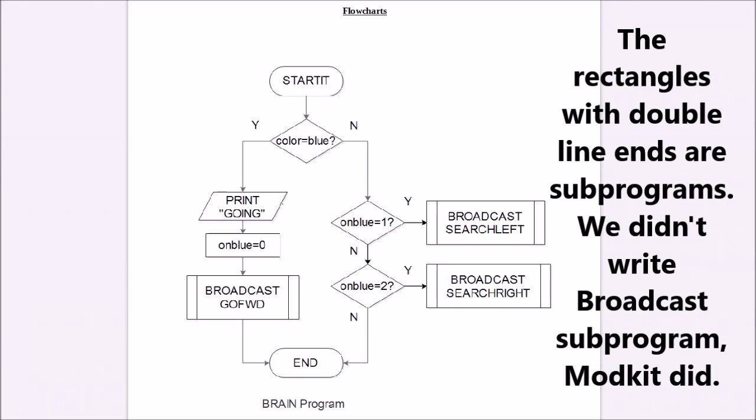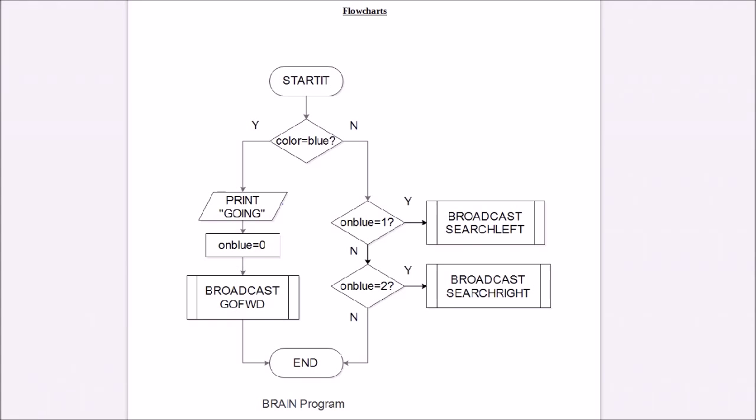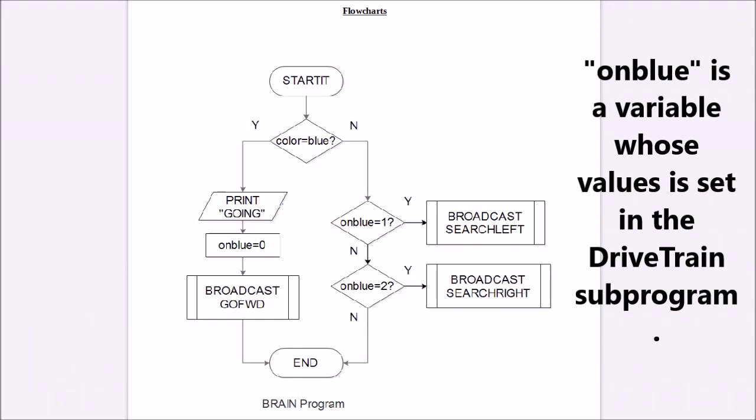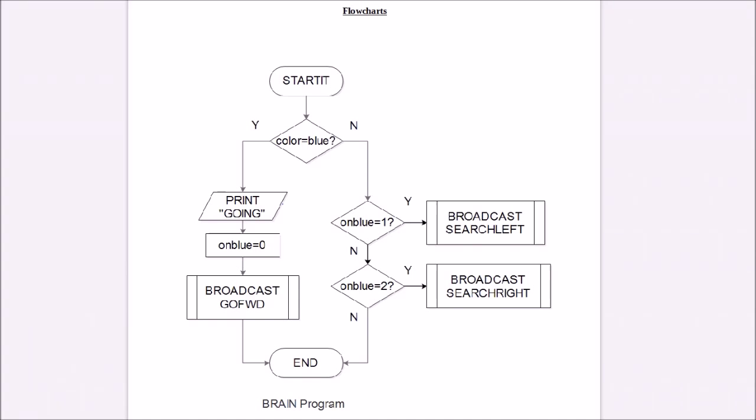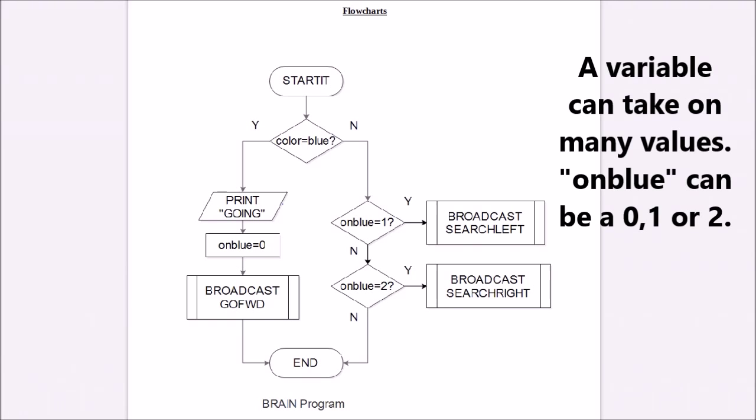Go forward is a subprogram which is in the drive train, and that's going to turn the wheels so that the robot goes forward along the blue line. Now the other two questions asked are if the color is not blue, then you have to decide whether to turn left or right. So if on blue is one, then you're going to broadcast search left and the drive train program will turn left. If on blue is two, then you will have the robot turn right. In other words, on blue is a variable. A variable is a thing that can take many values.